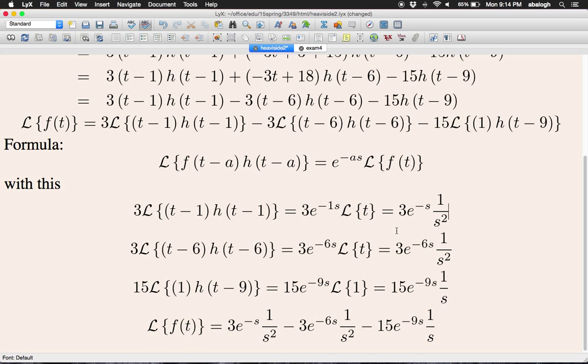Putting together all these three parts, we obtain 3 times e to the negative s times 1 over s squared, minus 3 e to the negative 6s times 1 over s squared, and another minus 15 e to the 9s times 1 over s. This is the Laplace transform of the original piecewise function.